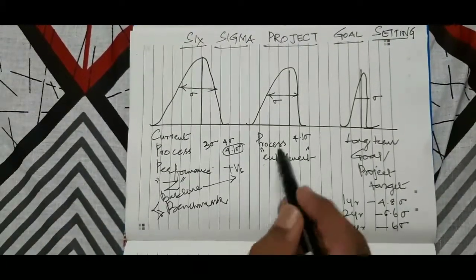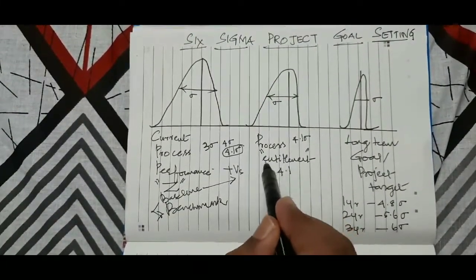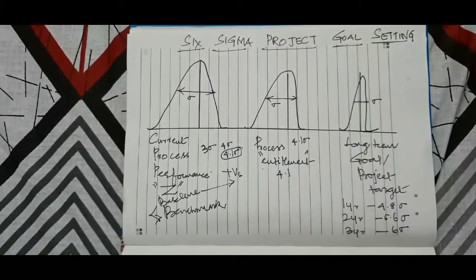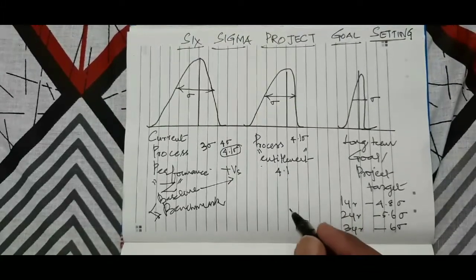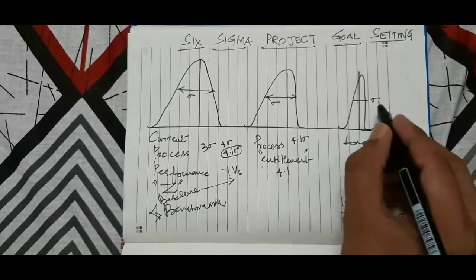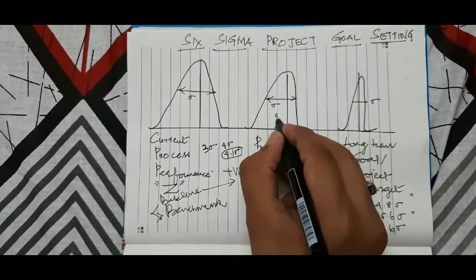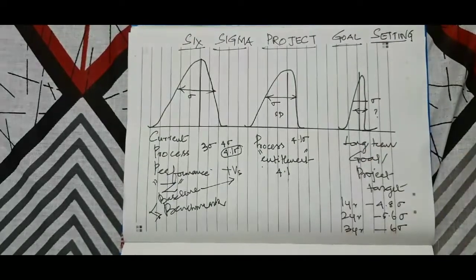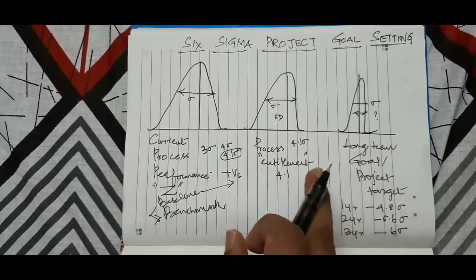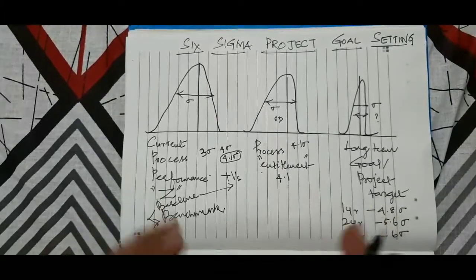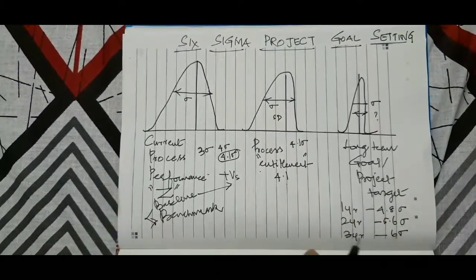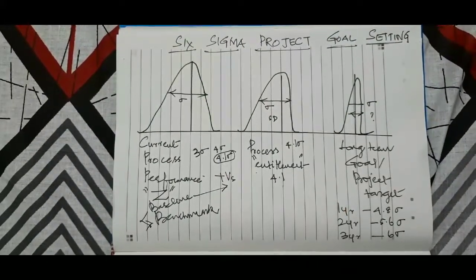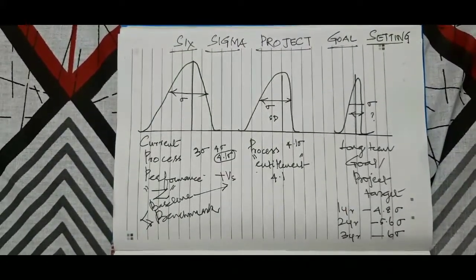The first and foremost thing is to consider entitlement, find the positives, and then identify the root causes and variations between the current state and the target. By understanding the standard deviation and what variations are causing the problem, you can put the project together and achieve the long-term goal. I hope this video is useful — have a nice day ahead.